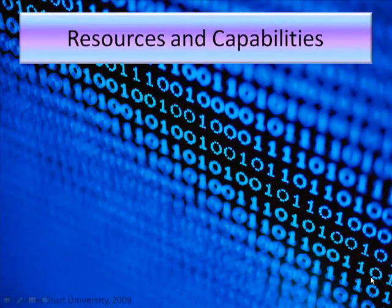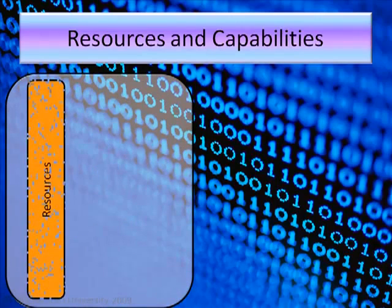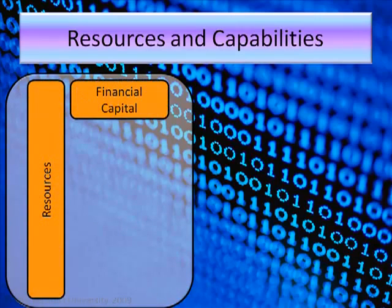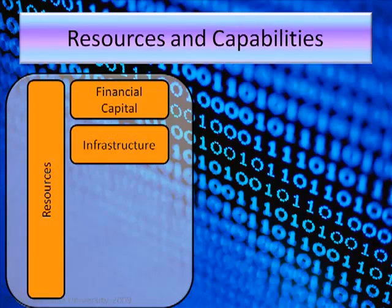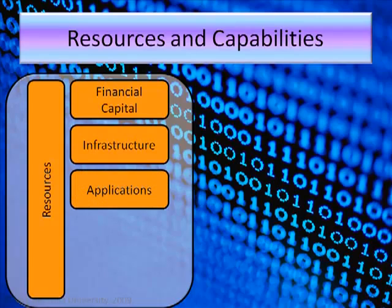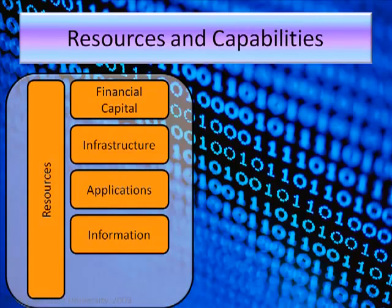Here's a more graphical view on resources and capabilities. Let's have a look at resources first. We've got financial capital — money — we need budgets to invest in our services. We've got infrastructure like mainframes, servers, desktops and network components. We've got applications like business applications and office applications. We've got information, and we're dealing with enormous amounts of data nowadays that we need to manage. And people actually doing the work — people being the resources.